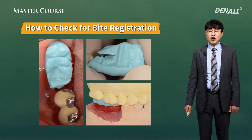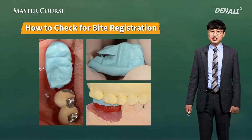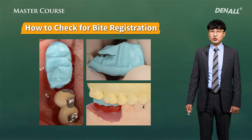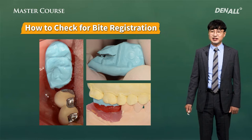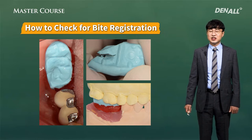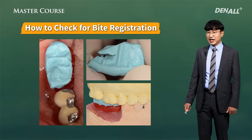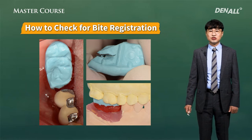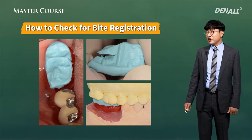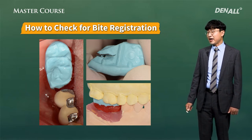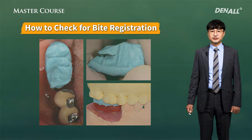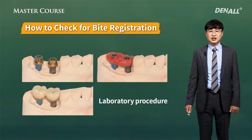If the bite has been taken too wide, then the bite needs to be trimmed at the lab. Because for the final prosthesis to save time, the mounting needs to be accurate. So the final prosthesis can be completed accurately at the lab.